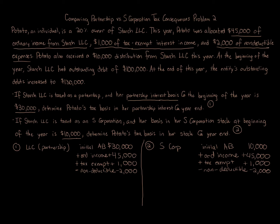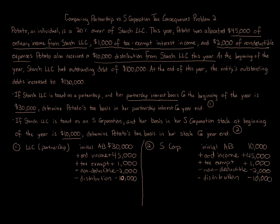Potato also receives a $10,000 distribution. Do distributions reduce basis? Yes, for both. The $10,000 distribution reduces basis for both entities. In my videos, we always consider distributions last because the consequences can vary depending on the numbers. For this problem, we can consider it now because the ordinary income is sufficient to offset the other items.